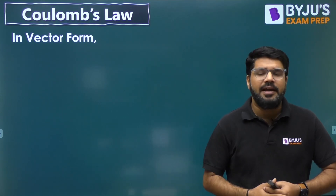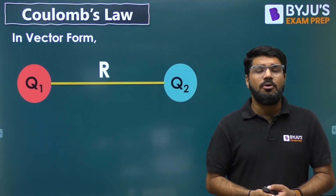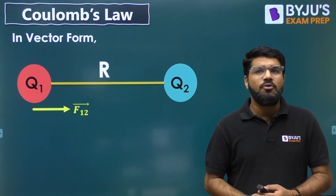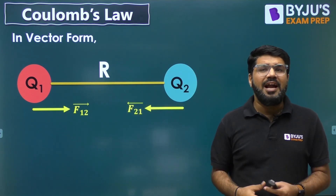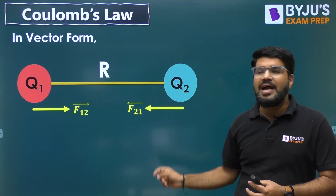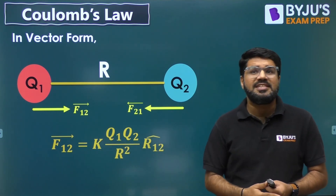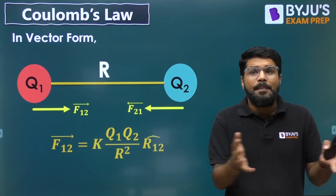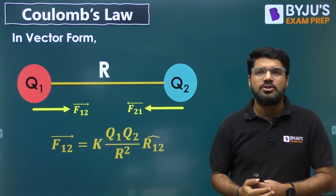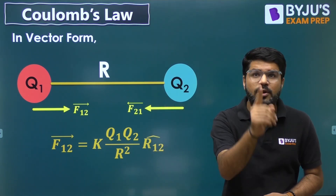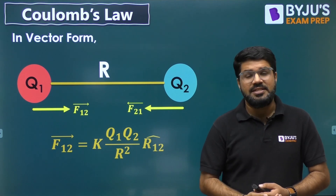Because you are going to relate this concept to electric field and to gate exam questions, the final vector form of Coulomb's law is important. The force exhibited by charge 1 on charge 2 is called F12; the force experienced by charge 1 due to charge 2 is F21. F12 is given by K Q1 Q2 divided by R squared, in the direction of the unit vector from charge 1 to charge 2, which is called R̂12. I will explain this through a numerical example as well — just stay tuned.